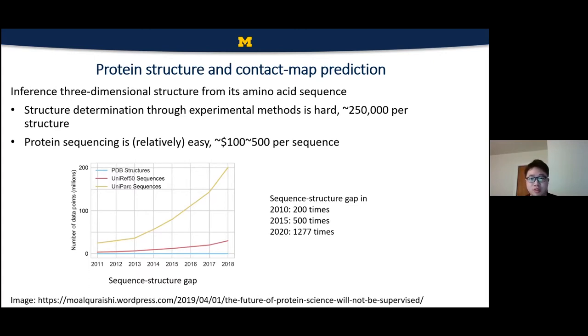So actually determining the protein structure is really quite expensive. It should be more than like $250,000 per sequence. But for a protein sequence, it is actually around $100. Because of that, the accumulation of sequence is certainly faster than protein structures. So actually in 2010, the gap is around 200 times, but now it's over 1,000 times.